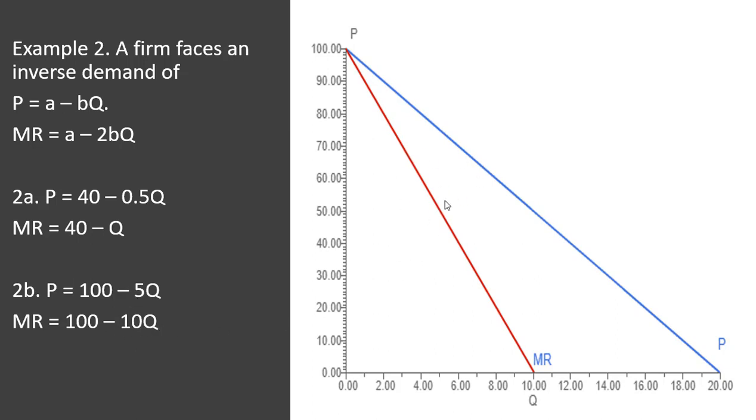And what I graphed over here on the right is example 2B. I have the demand curve with a vertical intercept of 100.